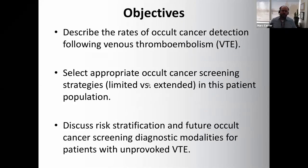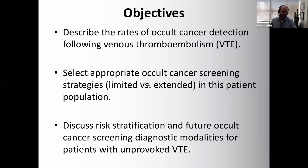Over the next 20 to 25 minutes, I want to do three things. First, describe the rates of occult cancer detection following venous thromboembolic disease — what's the rate for unprovoked versus provoked? Second, if the rate is high enough, should we screen patients for occult cancer, and if so, what is the appropriate screening strategy — limited or more extensive? Third, review current clinical practice guidelines, discuss risk stratification, and address upcoming modalities and what CANVector is working on.